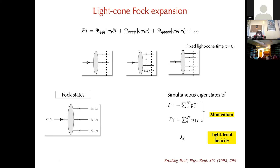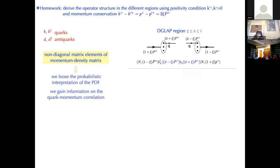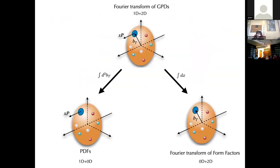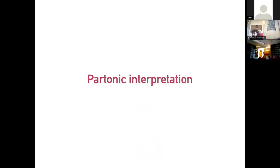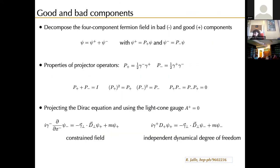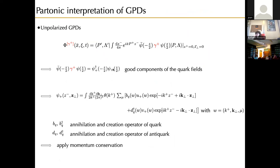This Fock space expansion is not related to the twist expansion. The twist expansion comes into play when choosing the gamma matrix. Leading twist corresponds to using only the plus (good) component of the field. When going to higher twist, you also have contributions from the minus (bad) component. In model calculations where you create partons, you are creating the good components of the field — they refer to the good components only.